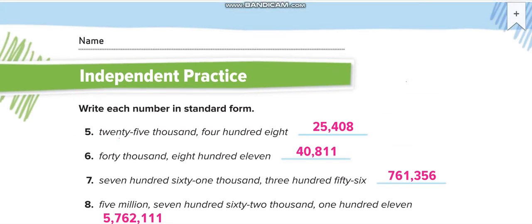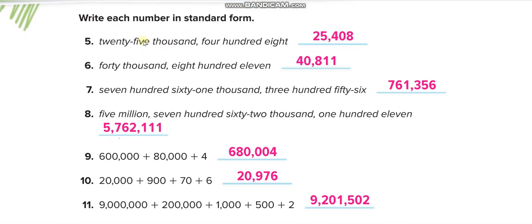Page 19 has more examples for you to practice. Twenty-five thousand, four hundred eight. Forty thousand, eight hundred eleven. Seven hundred sixty-one thousand, three hundred fifty-six. And this one has three periods — ones, thousands, and millions: five million, seven hundred sixty-two thousand, one hundred eleven. Practice them all and check your answers from this video.